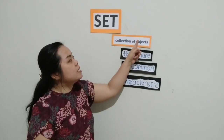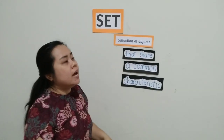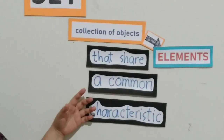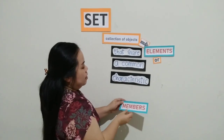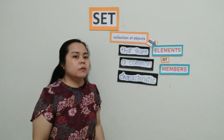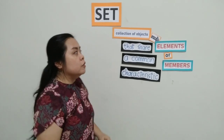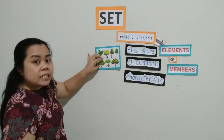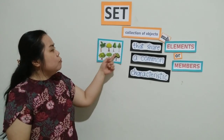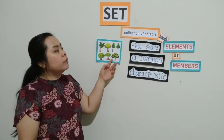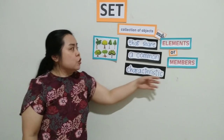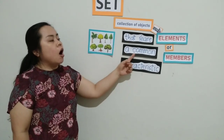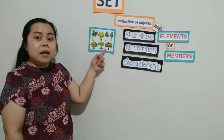When we say objects, it is because it says collection of objects. So when we say objects, it is what we call an element — elements inside the set. These trees or objects inside the set, in this picture, we call them elements or members. That's why we call this a set of trees. And why are they in one set? Because they share a common characteristic — it means they are the same trees.